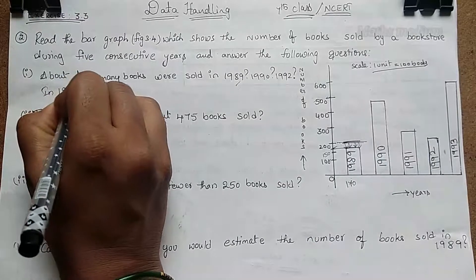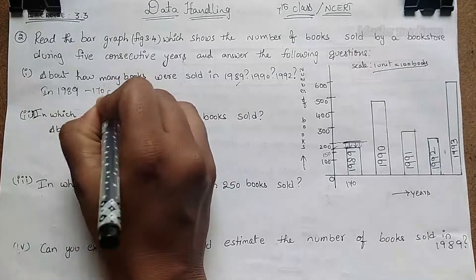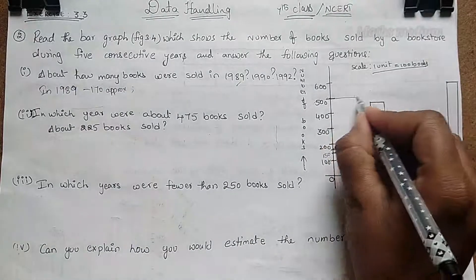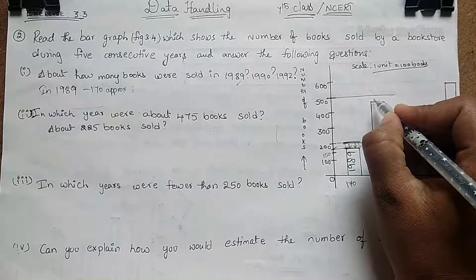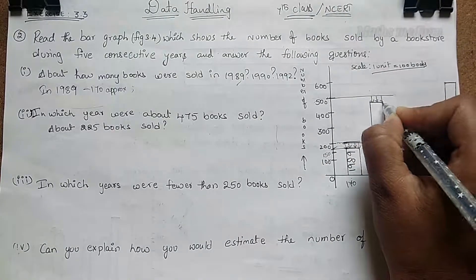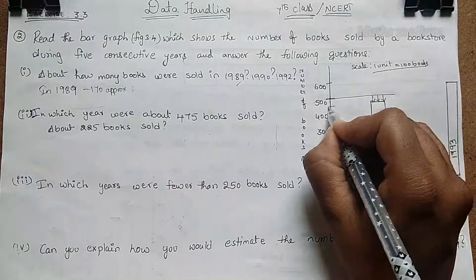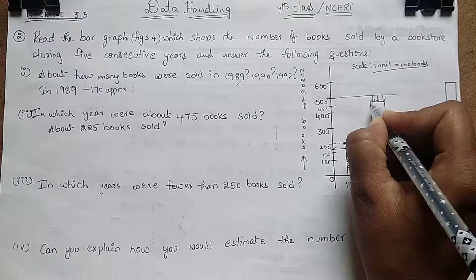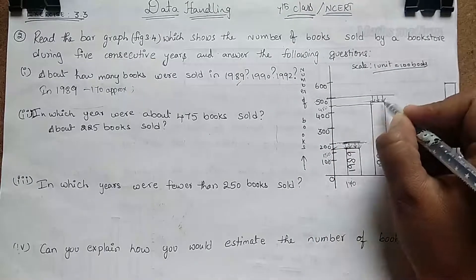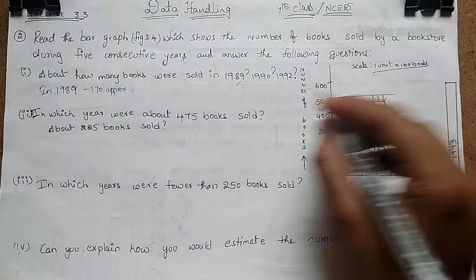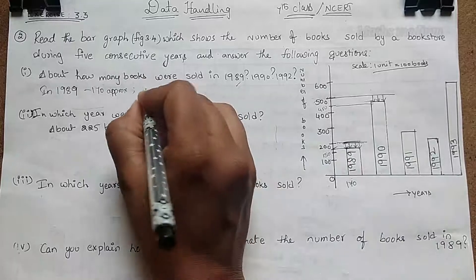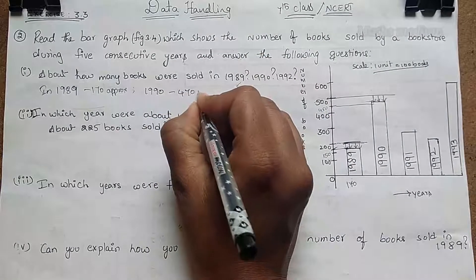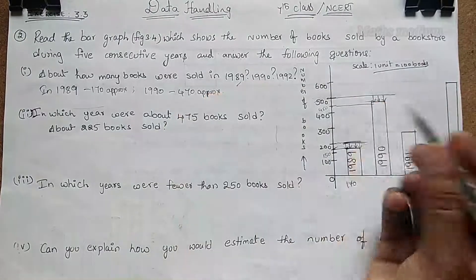In 1989 we sold approximately 170 books. Next, in 1990, make a mark — this was the 500 line but there was a small gap between the 500 line and the bar. The middle point between 400 and 500 is 450, and it is just above 450, so it seems to be about 470. I am taking it as approximately 470 books.